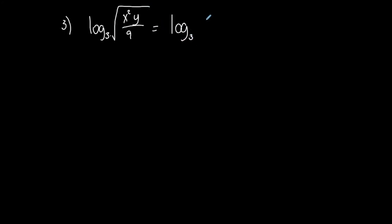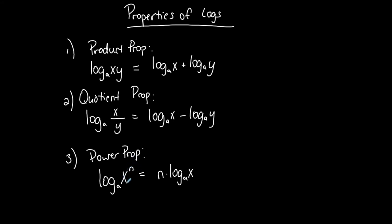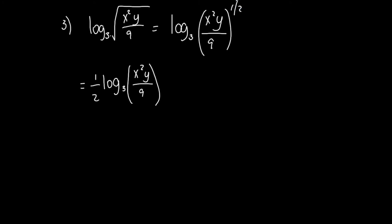I can rewrite a square root as an exponent of one half — that's a rational exponent. The index of the radical sign is two, and the denominator of the fractional exponent is the same as the index of the radical. So if it were a fourth root, the exponent would be one fourth. The first thing I want to do is use the power property to bring this one half exponent to the front: one half times log base 3 of x squared y over 9. The power property requires the exponent to apply to the whole expression, which it does here.